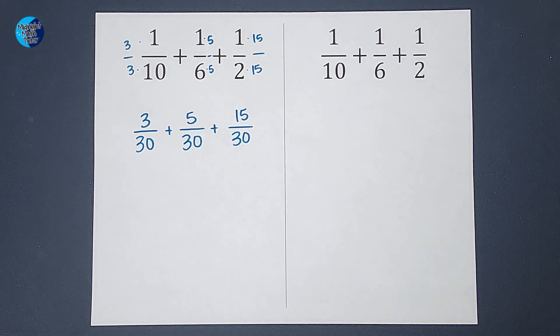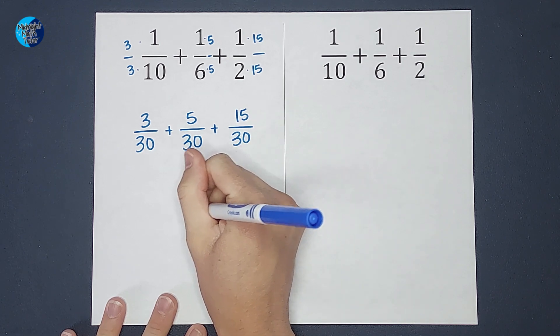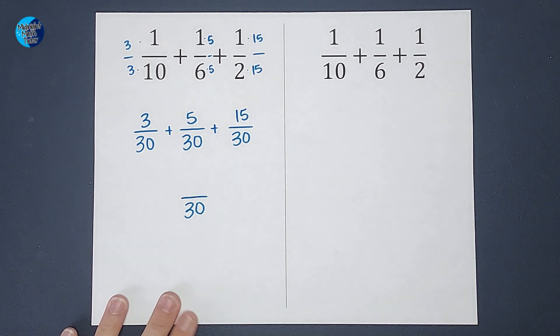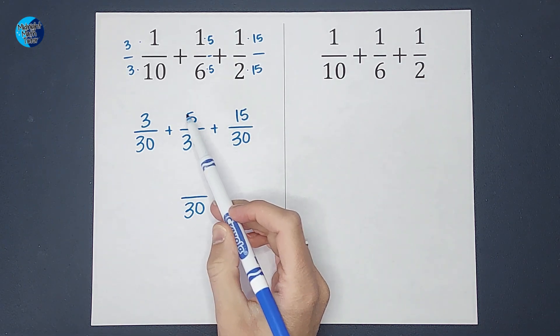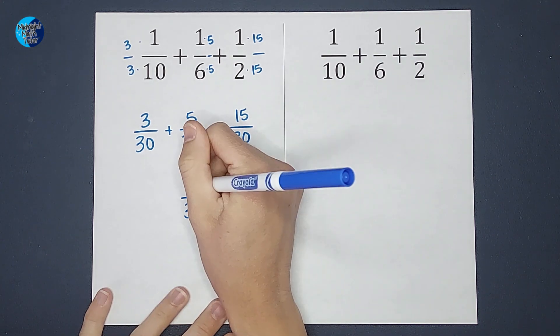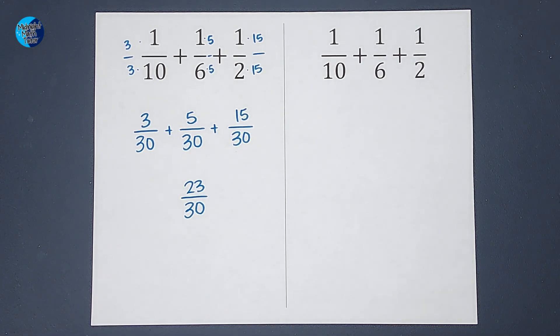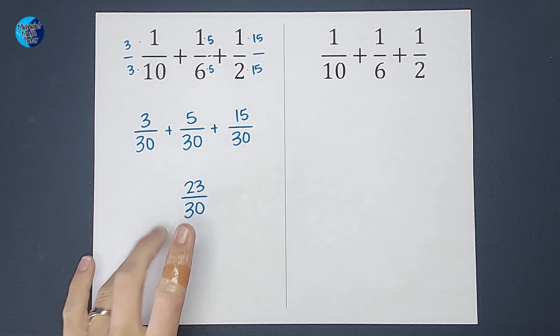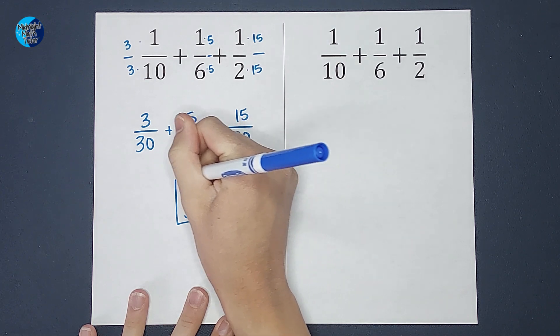Now that the denominators are all the same, when I add them, the denominator stays 30. That's why it needed to be the same. That was the whole point. Then I add the numerator. So three plus five plus 15 gives me 23. Now we always want to make sure it doesn't simplify. And this is as simplified as this one goes. So that is my answer.